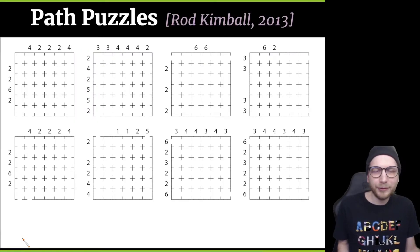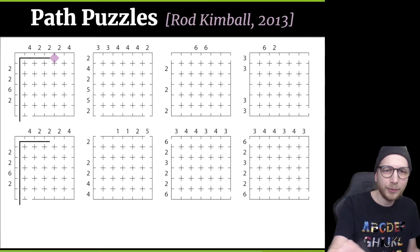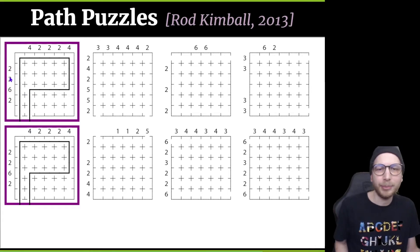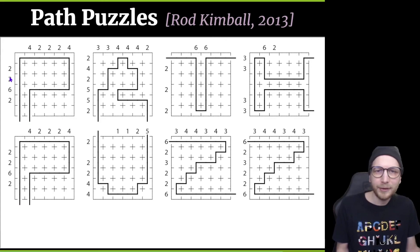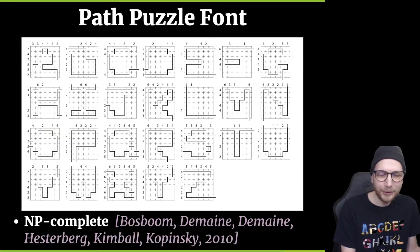Next puzzle is path puzzles. Here you want to find a single path from the entrance to the exit, such that in each row and column you have exactly the specified number of occupied pixels. It's a puzzle by Rod Kimball of Flying Karamazov Brothers fame, who often attends Gathering for Gardner. In this case we get 'path puzzles.' Here's a full alphabet, paired with an NP-completeness result, which we did together with Rod.